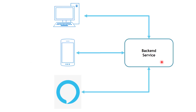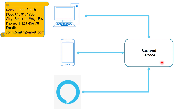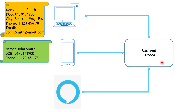Now let's get back to our solution. Let's say the desktop version wants to display the full profile details — including name, date of birth, city, phone number, and email address. However, the mobile version is less interested in all that information and just wants to display username, date of birth, and phone number. While the Alexa skill just wants to display the first name of the user.